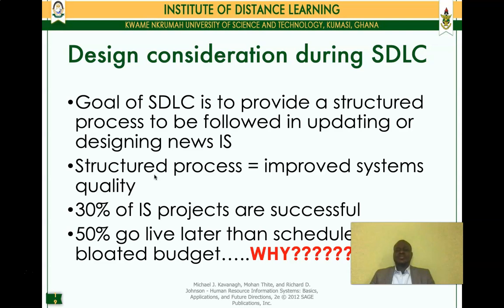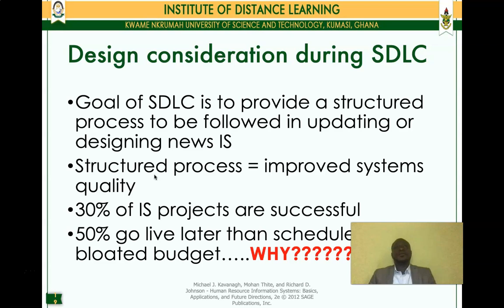Statistics show that about 30% of information systems projects are successful. The question is, where does the 70% go? Something is probably accounting for the failure of that 70%. Again, 50% of the 30% that are successful also go live later than the scheduled dates, usually with bloated budgets. One of the most important reasons we need to consider systems scope is to prevent scope creep.